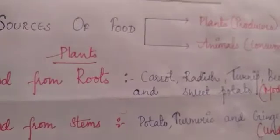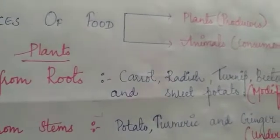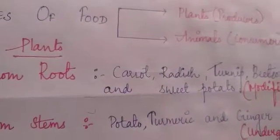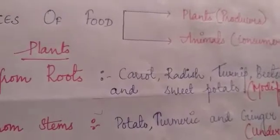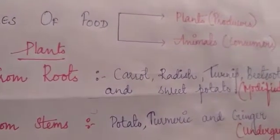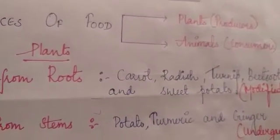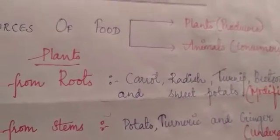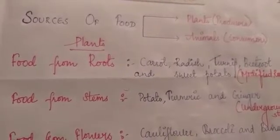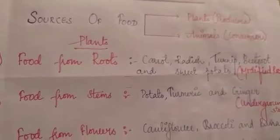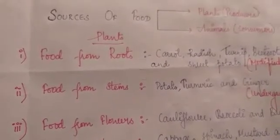Mainly we get food from plants and animals. As we all know, plants can prepare their own food, so we call them producers. But animals cannot prepare their own food — they have to depend upon other organisms and plants for their food, so we call them consumers. Plants store prepared food in leaves, stems, flowers, etc. So now we can see food from plants in detail.